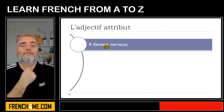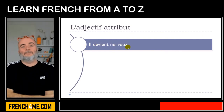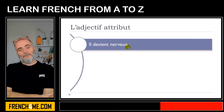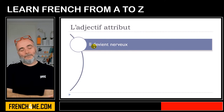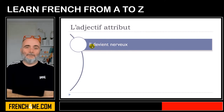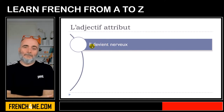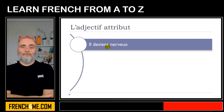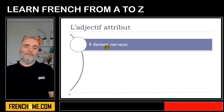Il devient nerveux. In that case it's quite interesting because I didn't use être but instead the verb devenir — to become. Il devient nerveux.